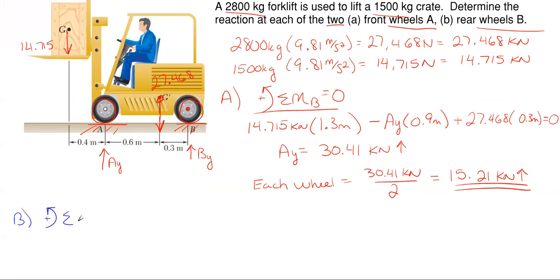Summing moments about A, counterclockwise is positive. We would have once again the 14.715 kilonewtons, it would be positive rotating counterclockwise about A. Its distance is 0.4 meters to A. Ay, we don't include. And then our weight from our forklift will be rotating clockwise, so that would be minus 27.468 kilonewtons times 0.6 meters. And then By, the way I have it drawn, will be rotating counterclockwise, so it will be positive, By times 0.9 meters.